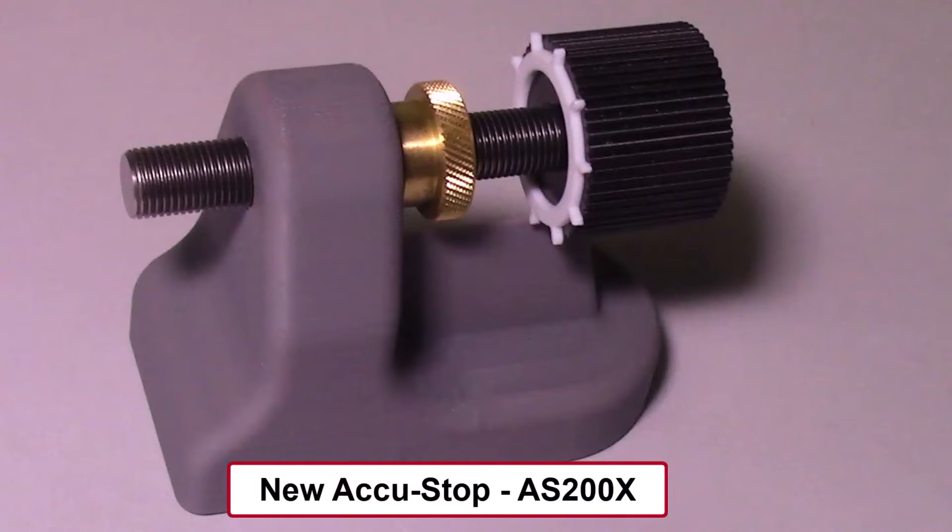This video describes the newly redesigned AccuStop for the AccuWedge segmenting system. The AccuStop is used to adjust the lengths of the segmented wedges when slicing these segmented wedges on a bandsaw using the AccuWedge segmenting system.